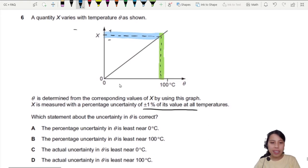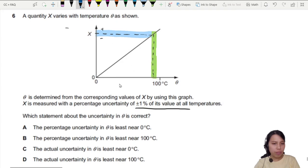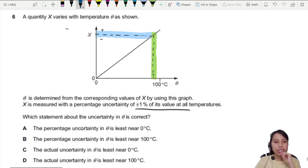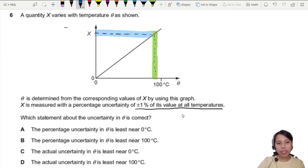First choice: percentage uncertainty in theta is least near zero degrees. So they're comparing percentage uncertainty with the actual uncertainty. Where is largest, where is least? So the first statement is already telling us something. This one percent is what we call percentage uncertainty. That means my percentage uncertainty is the same. Cannot be least near zero. Cannot be least near hundred. No. Same everywhere.